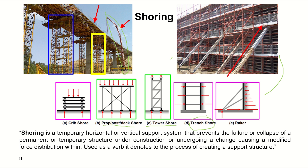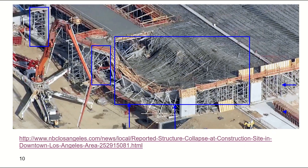Shoring is a temporary horizontal or vertical support system that prevents the failure or collapse of a permanent or temporary structure under construction. Depending on your activity, you use one of the different types of shoring systems. This is one of the most important activities, and there are many risks associated with it. I personally have seen many failures during construction — I myself designed many formworks and have seen that this can affect laborers and sometimes the community as well.